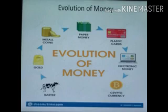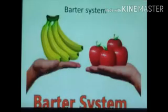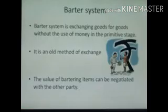So children, the evolution of money starts with the exchange of goods for goods, that is product for product. Now we are progressing using plastic money such as credit cards and debit cards. The first stage in evolution of money is the barter system. Barter system is exchanging goods for goods without using money in the primitive stage. It is an old method of exchange.